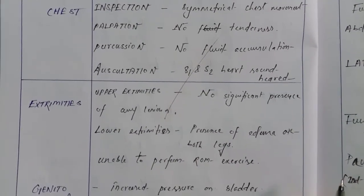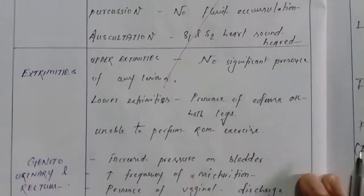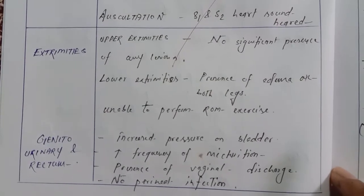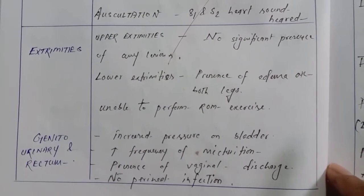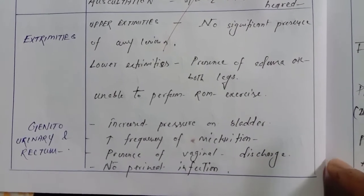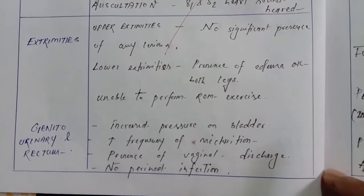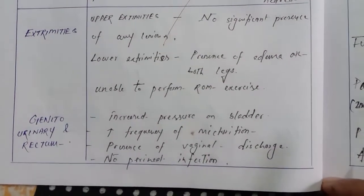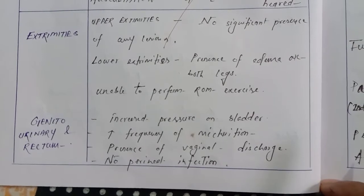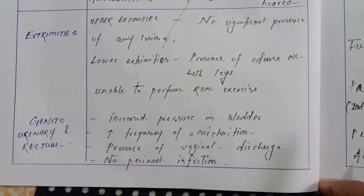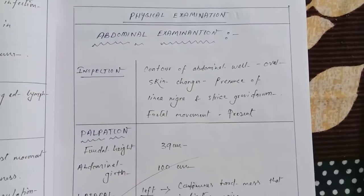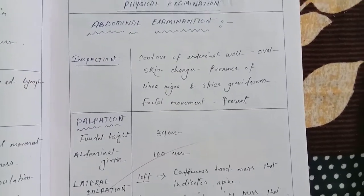Auscultation: S1 and S2 heart sounds normal. Upper extremities: no significant findings. Lower extremities: presence of edema on both legs, unable to perform ROM (range of motion) exercises. Genitourinary and rectum: increased pressure on bladder, increased urinary frequency, presence of vaginal discharge, no perineal infection.